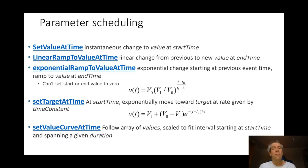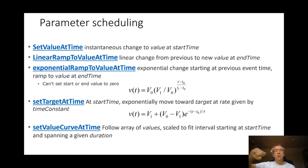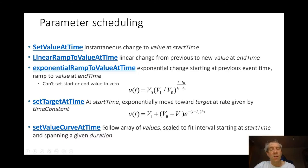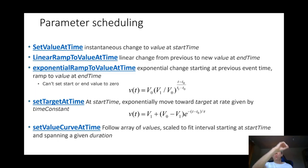There's another form of exponential movement, which is more traditional for analog circuits: setTargetAtTime. You specify a start time and then exponentially move toward a target at a given rate — you may never fully reach that target. Finally, there's one more method where you specify an array of values, and the curve will follow those array values over whatever duration you provide, getting interpolated and scaled to fit that duration.